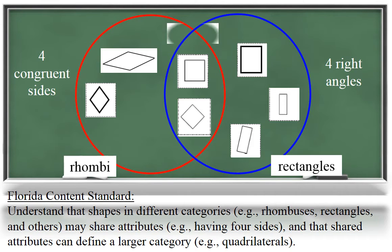What do you notice about the shapes in the middle? That's right, they are squares. A square has both the attributes of a rectangle and a rhombus.